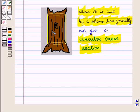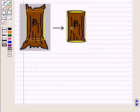Also we see that there are no edges and there are two circular bases. Now let us draw its geometrical shape. So here we have two circular bases and a curved surface. So we can say that it is a cylinder.